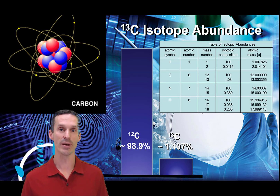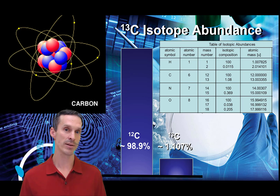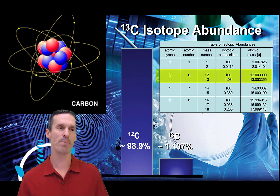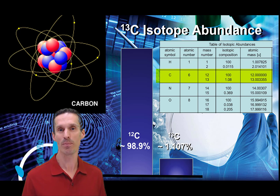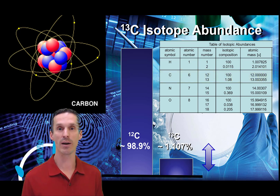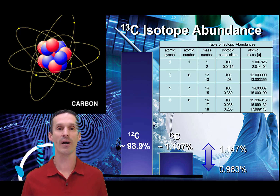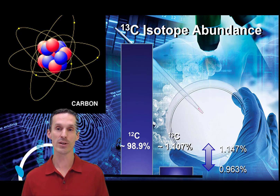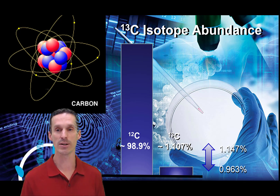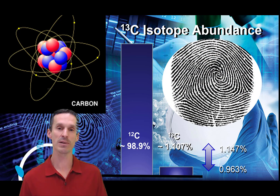The abundance of carbon-13 is listed as about 1%, but I do say 'about' because it actually varies quite a bit. Depending on the source of carbon, you can have a little more or a little less — not by much, but it does vary from sample to sample. This carbon-13 ratio is what we're going to take advantage of. We can precisely measure exactly what the abundance of carbon is and use that as a fingerprint to tell the source or origin of that material.